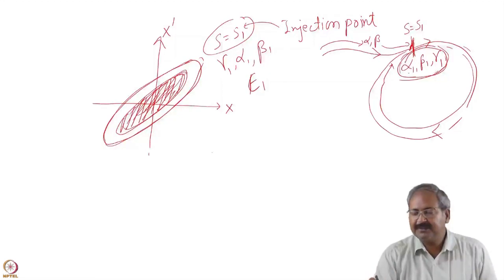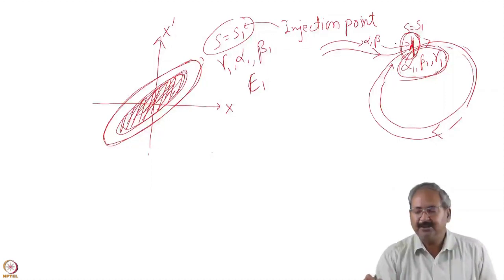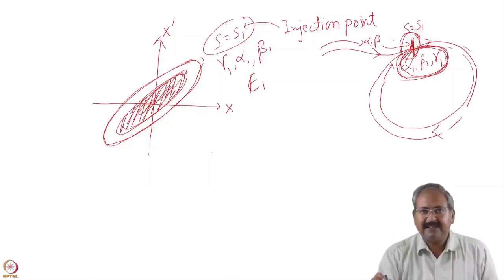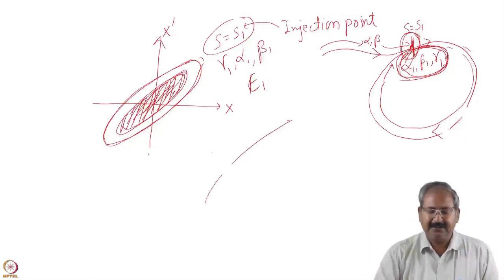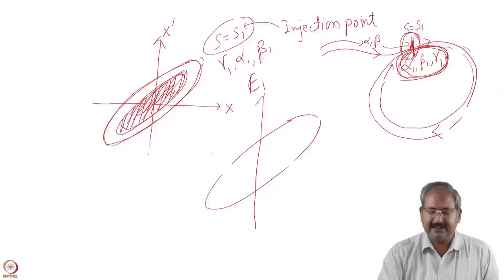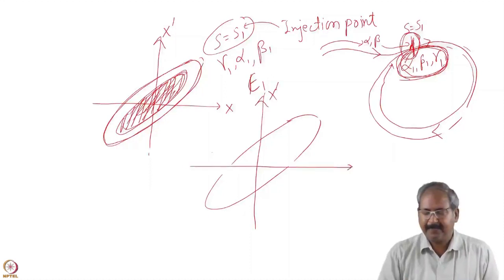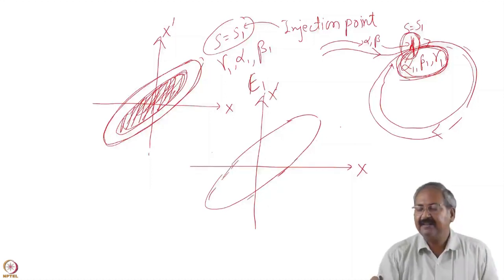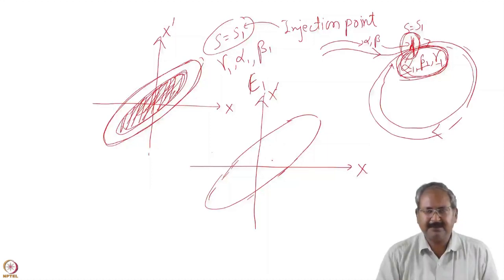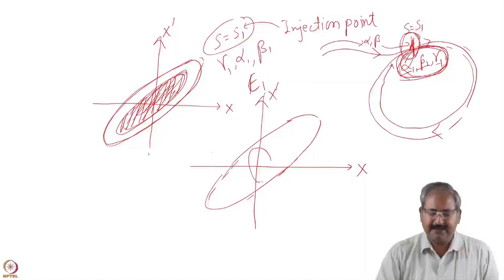Now suppose this alpha, beta, gamma at the end of the transport line does not match with the values of the alpha, beta, gamma of the synchrotron. Then the transport line will send the beam with a different orientation. This is the ellipse drawn by α₁, β₁, γ₁ parameters at the injection point of the synchrotron. If the transport line sends the beam with different alpha, beta, gamma, the ellipse of that beam will be misoriented with respect to this ellipse — meaning the beam will come like this.